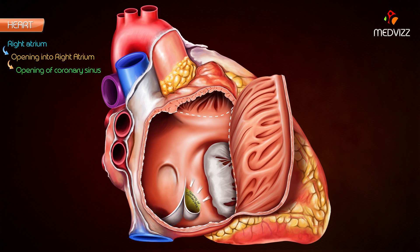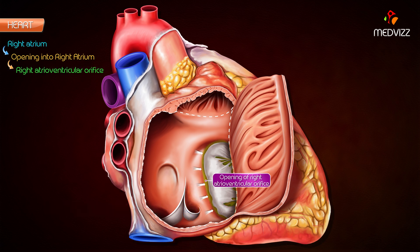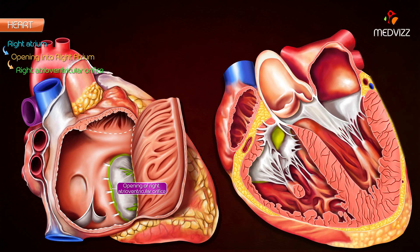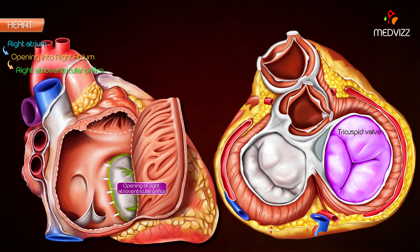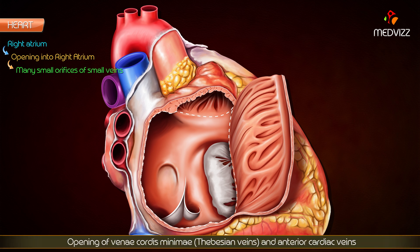The coronary sinus, which drains most of the blood from the heart, opens into the right atrium between the openings of the inferior vena cava and the right atrioventricular orifice. It is guarded by a rudimentary non-functioning valve called the Thebesian valve. The right atrioventricular orifice is the largest opening; it communicates the right atrial chamber with the right ventricular chamber and is guarded by the tricuspid valve. There are also many small orifices of the venae cordis minimae and anterior cardiac veins.